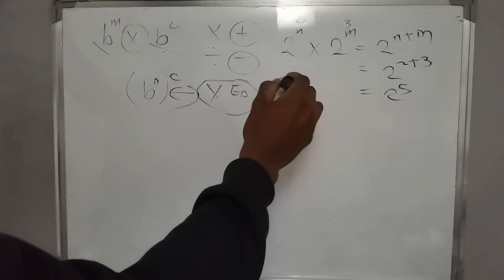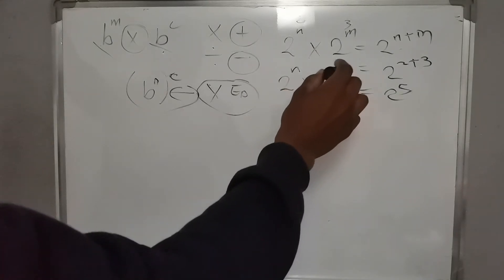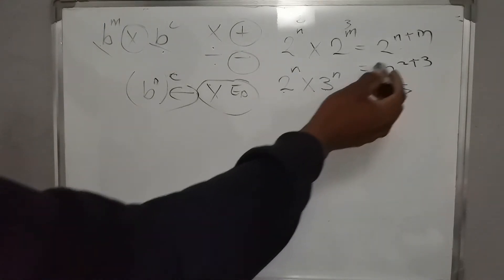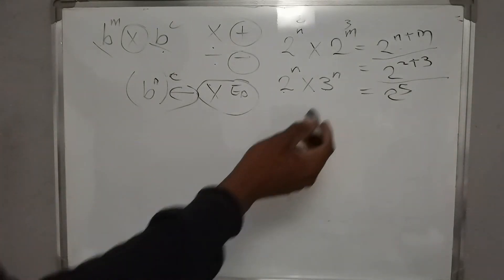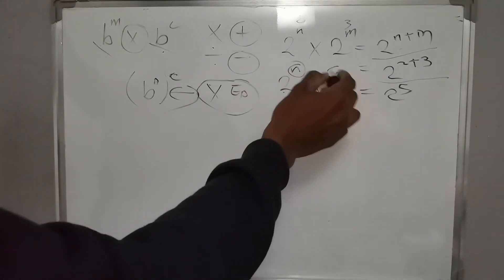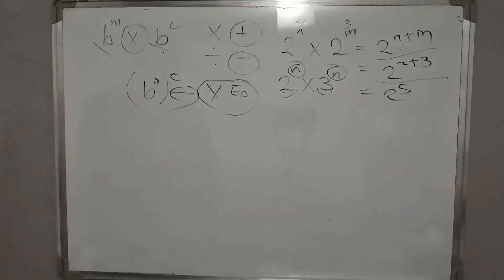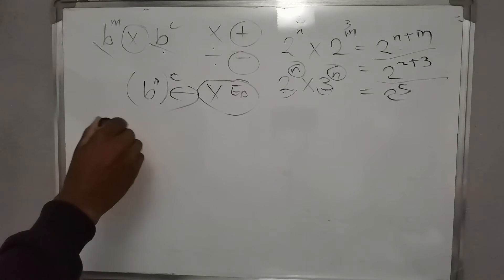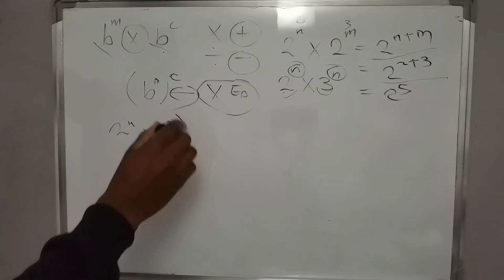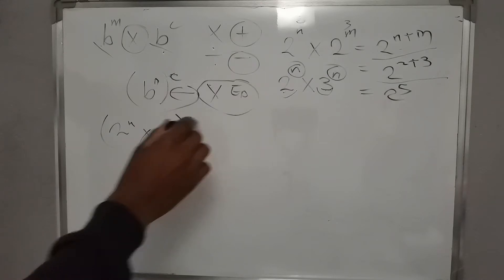But if we have 2 raised to n times 3 raised to n, we cannot add the exponents because the bases are not the same. If the bases are not the same, there is nothing we can do — unless we have them enclosed in brackets with an exponent outside.